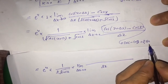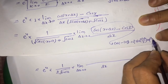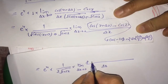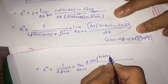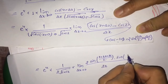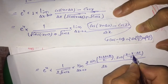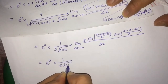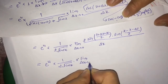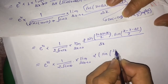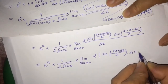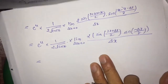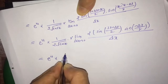Now we can use the formula cos C minus cos D equals 2 times sin of (C + D)/2 times sin of (D - C)/2, applied to cos(x + δx) minus cos x. Then we get exponential(u) times 1/(2√(cos x)) times limit δx tends to 0 of 2 times sin((2x + δx)/2) times sin(−δx/2), whole divided by δx.